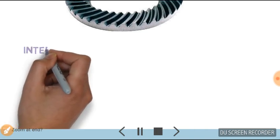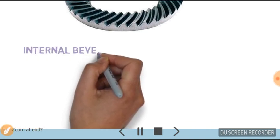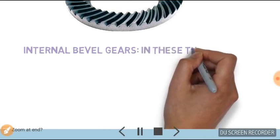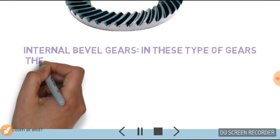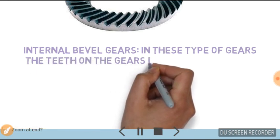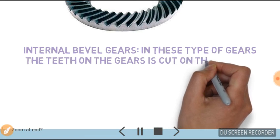Now last one is internal bevel gear. In this type of gear, the teeth on the gear are cut on the inside area of the pitch cone.